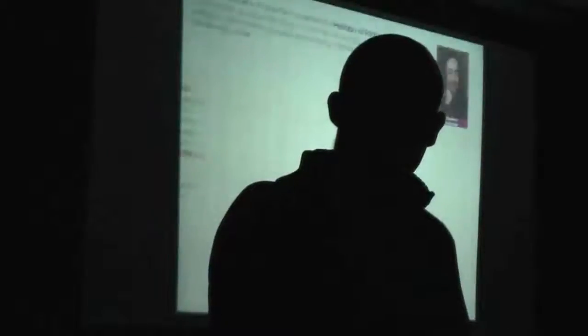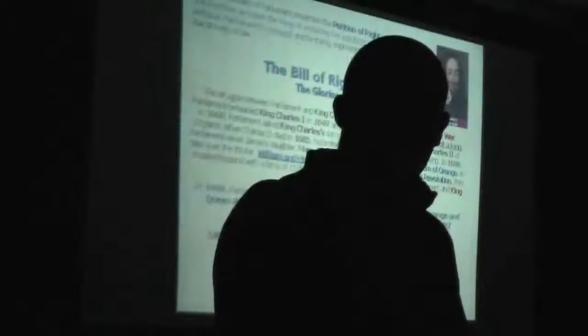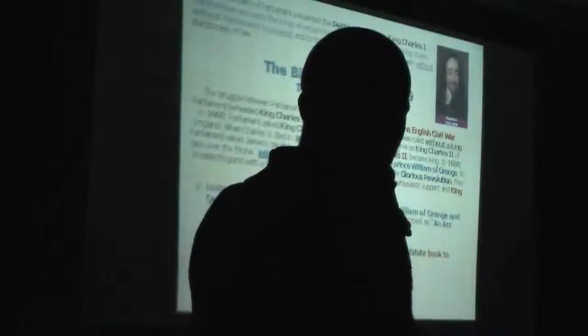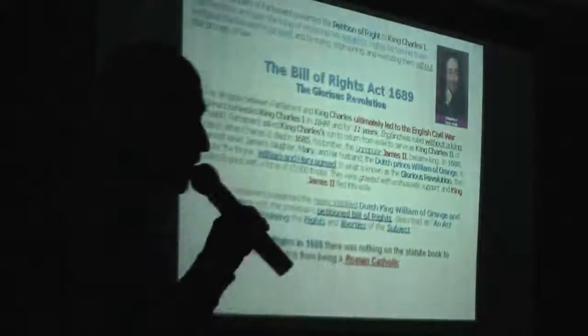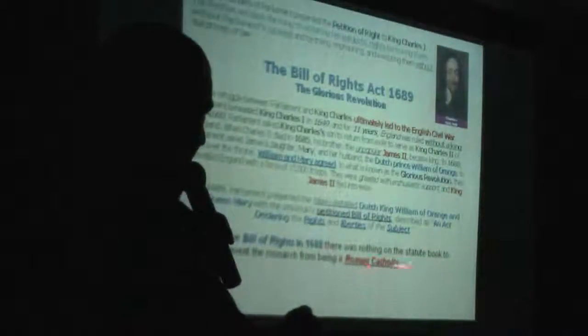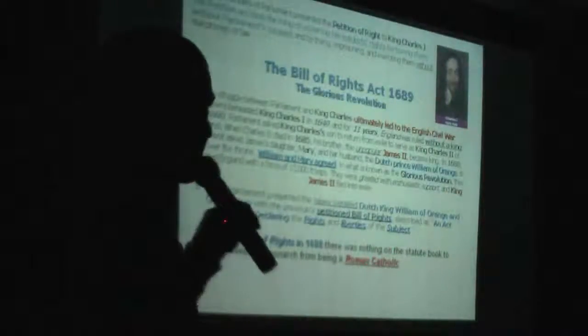I'm going to investigate all of these three words. Bill of Rights, 1688 — there was nothing on the statute book to prevent the monarchy from being a Roman Catholic. We're going to investigate that once because there's something happening in the monarchy that involves this. I'm going to try and link you to it, but first we're going to look into these words and see what they mean.